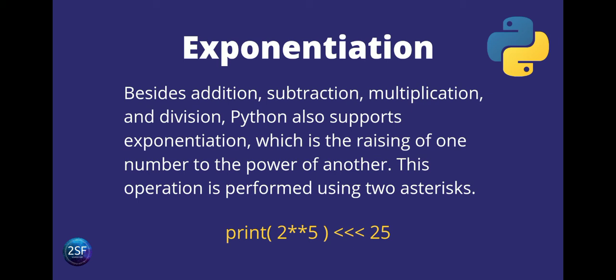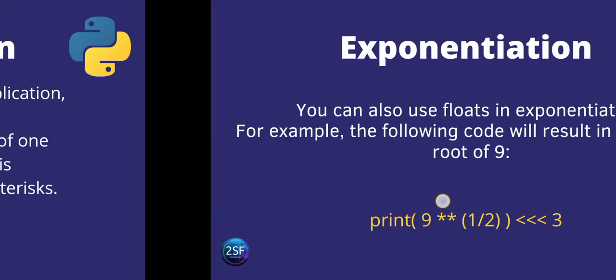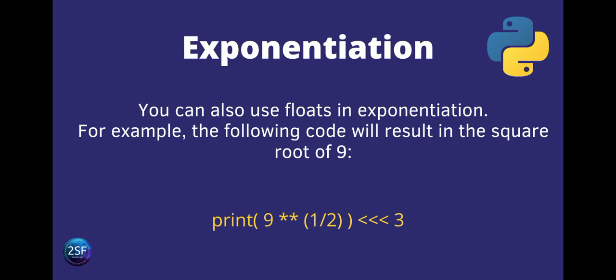This operation is performed using two asterisks. So `print(2 ** 5)` — the output will be 25. You can also use float in exponentiation. For example, the following code will result in the square root of nine.